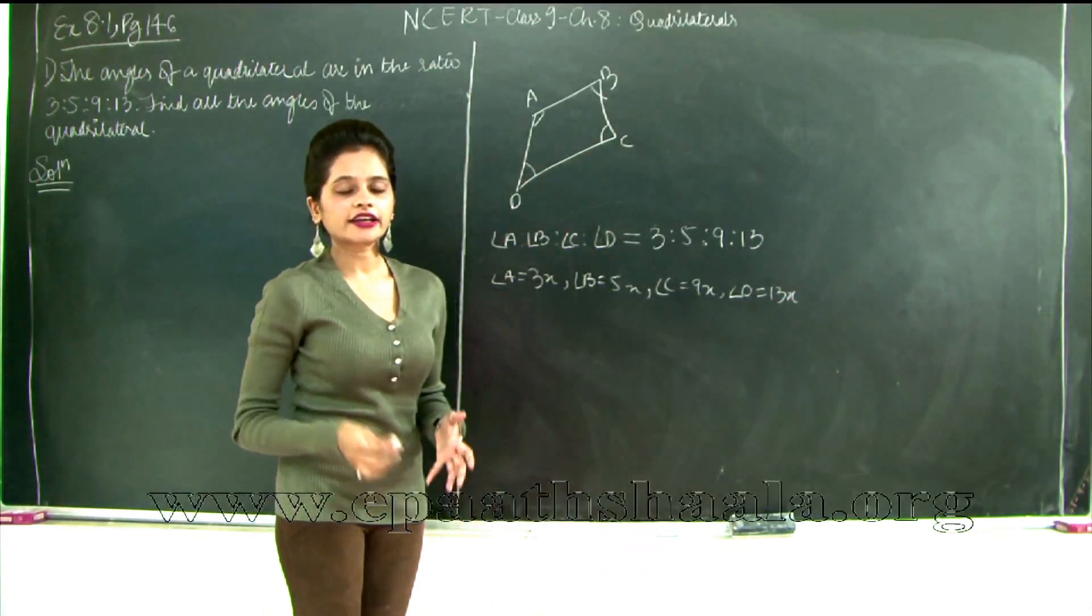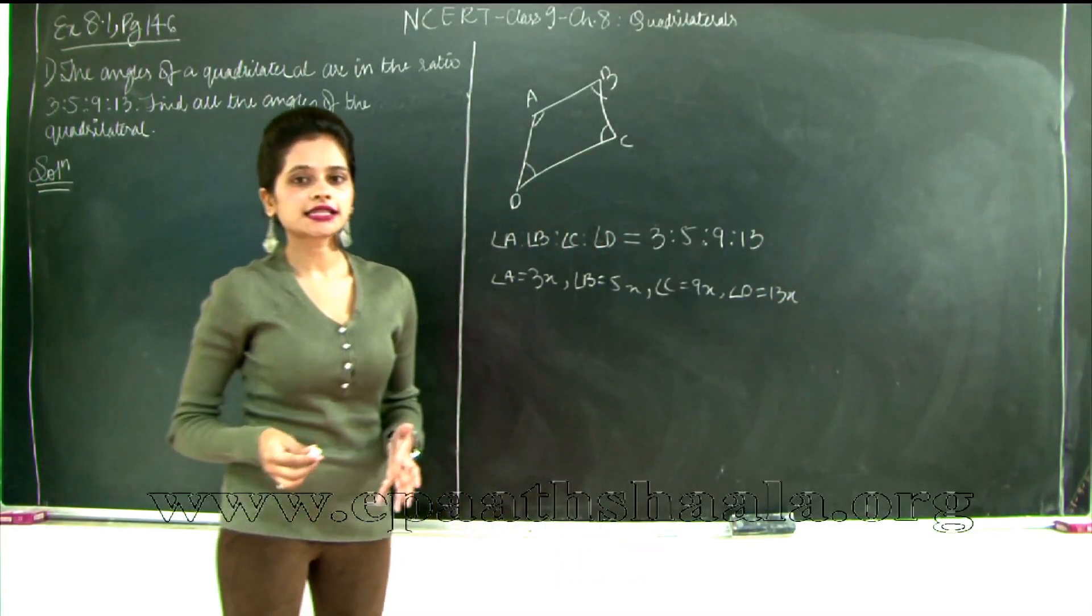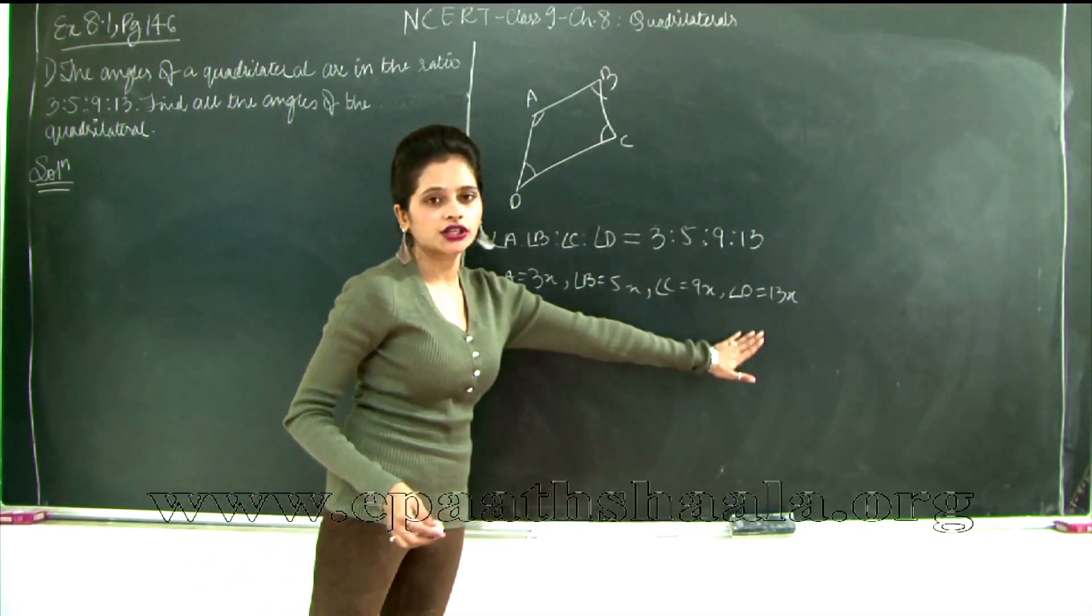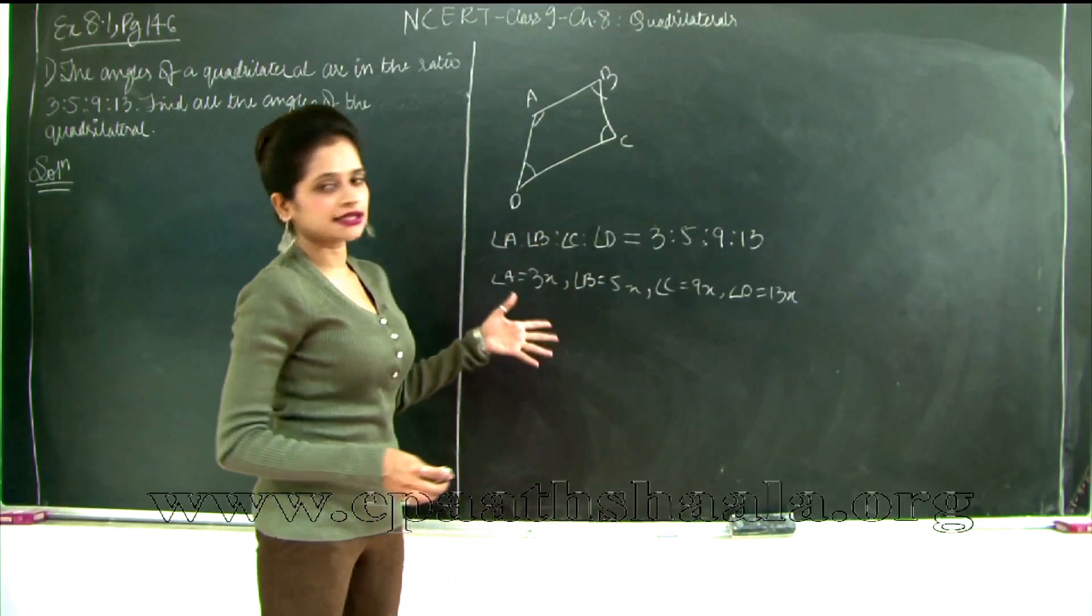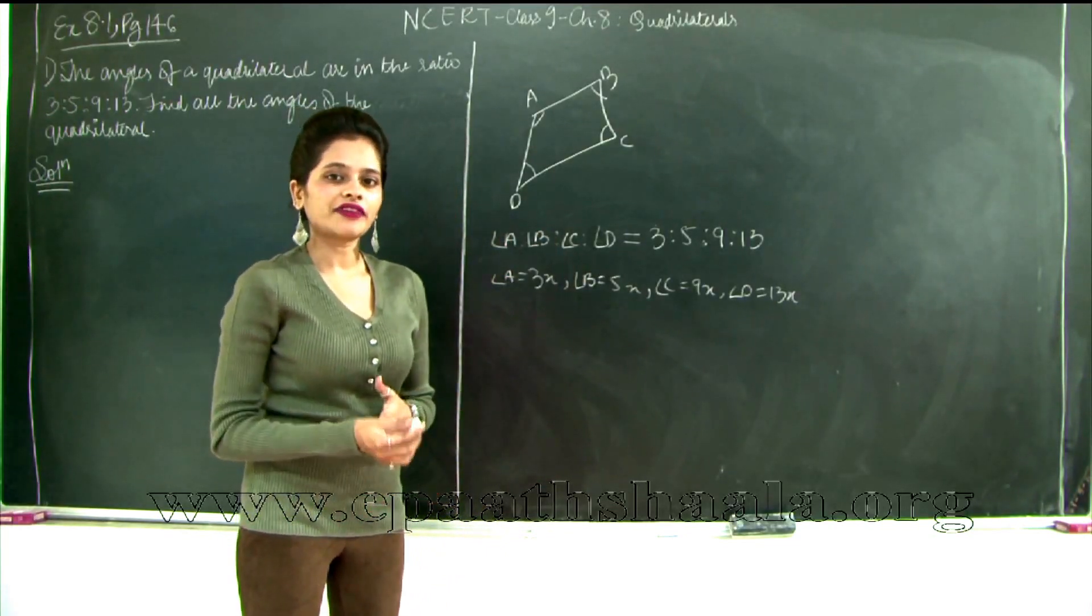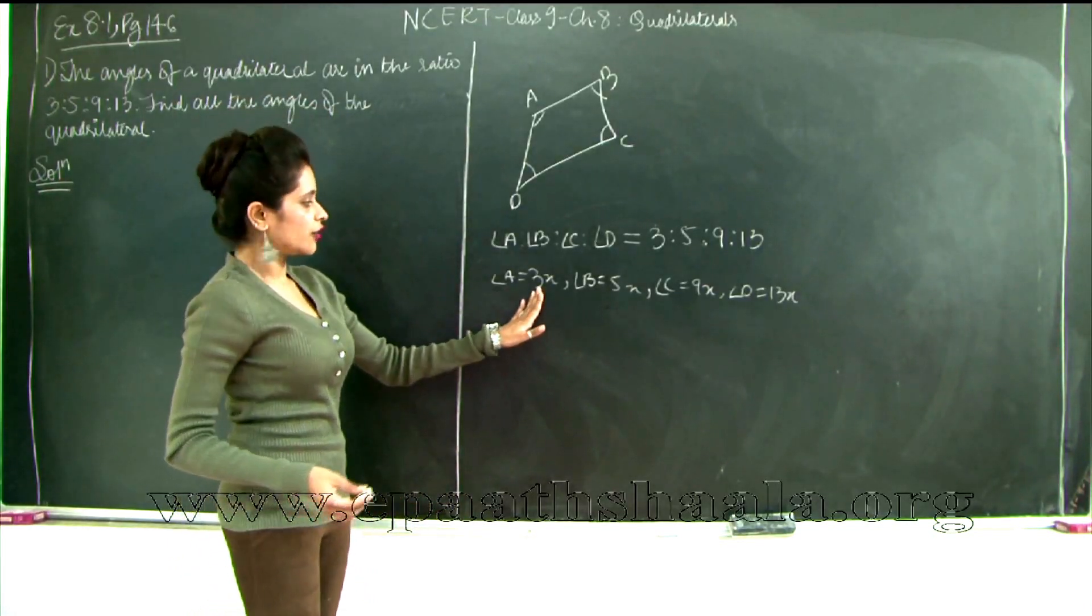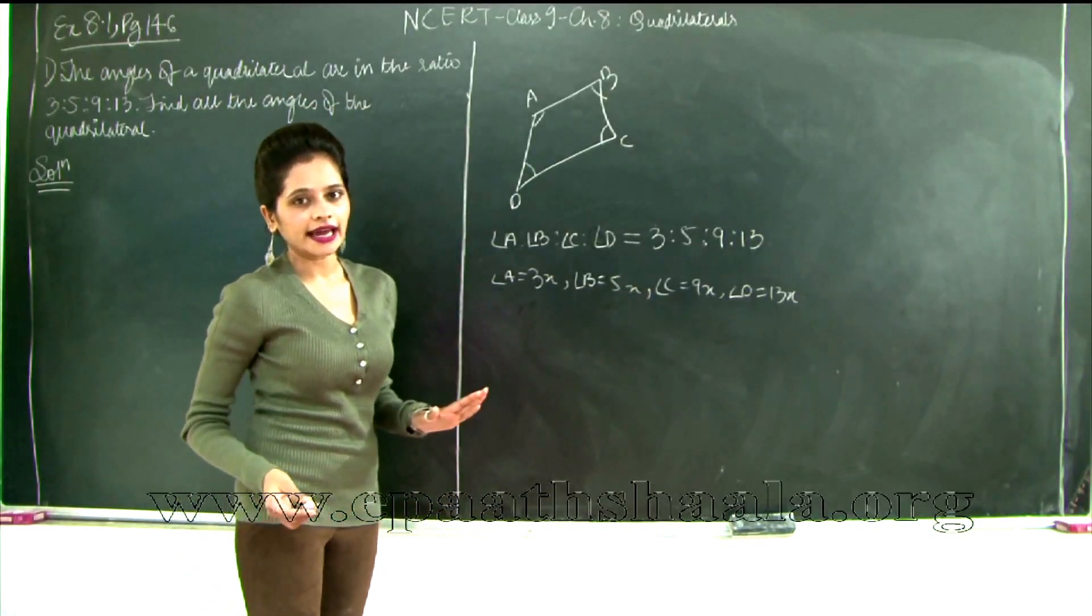We also know that the sum of angles of a quadrilateral are 360 degrees. So when you add 3x plus 5x plus 9x plus 13x you get 360 degrees. Using that you can find the value of x. Then once you find the value of x you can substitute it for your angles A, B, C and D and find the angles.